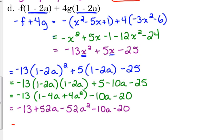Final step. Put it all together. Negative 52a squared. 52 minus 10 is 42, positive 42a. And, negative 13 minus 20 is negative 33.